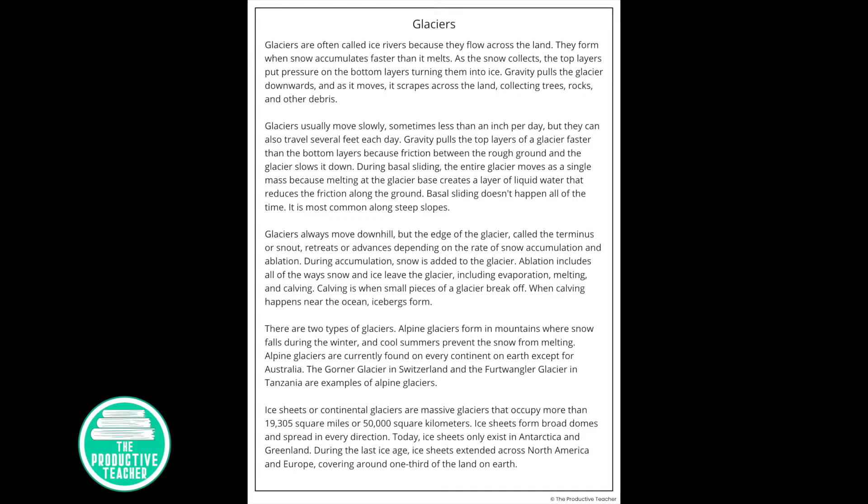Glaciers are often called ice rivers because they flow across the land. They form when snow accumulates faster than it melts. As the snow collects, the top layers put pressure on the bottom layers, turning them into ice.